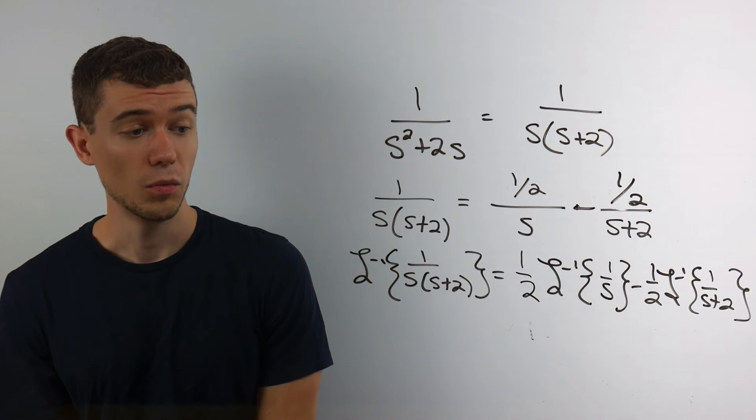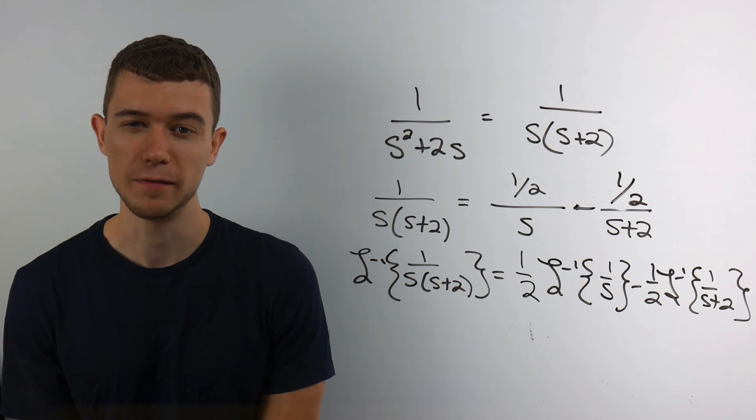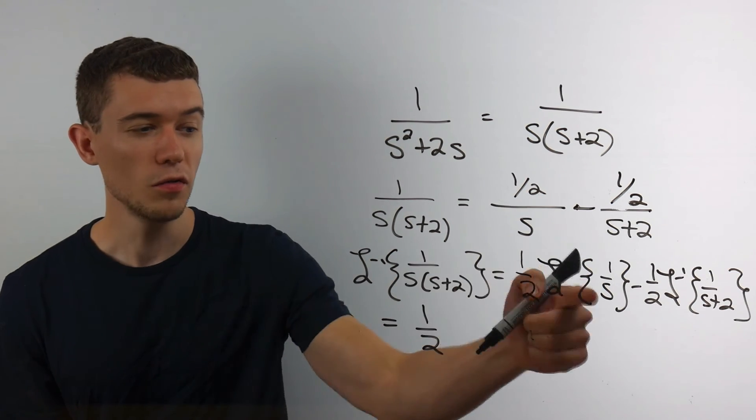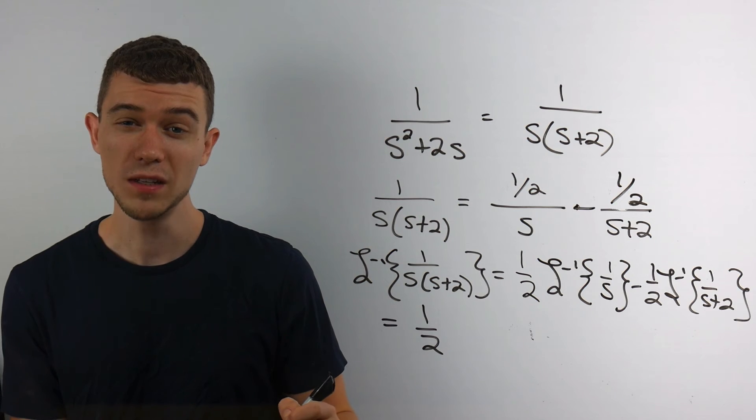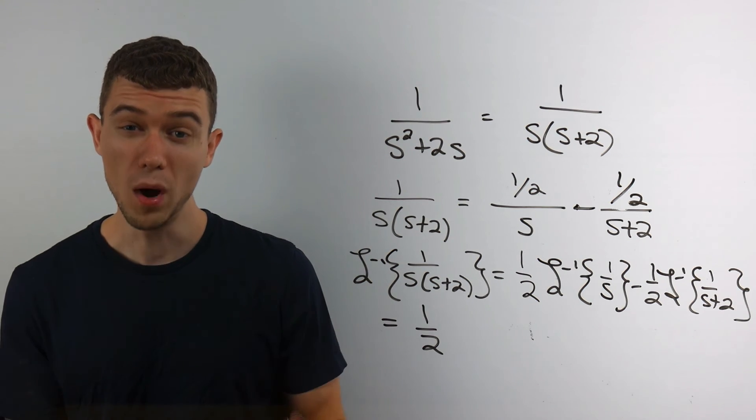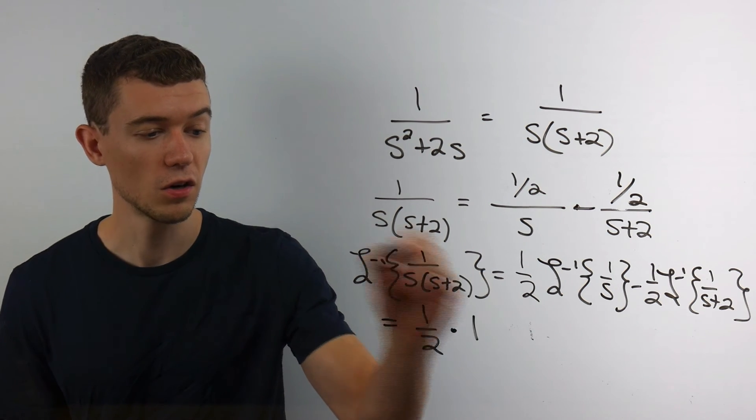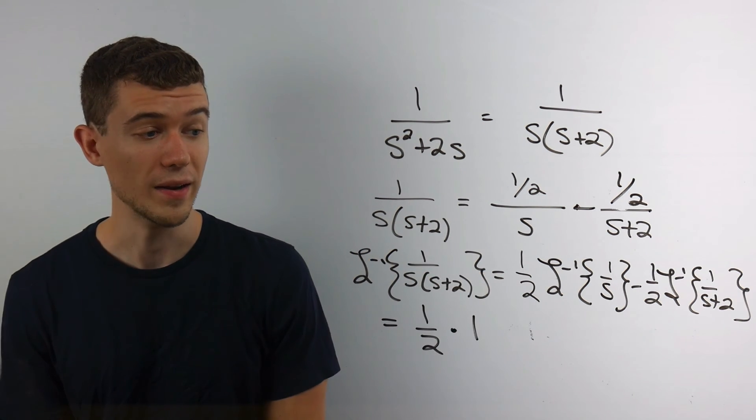Now these should be fairly easy to figure out using a table of Laplace transforms. If you notice, 1 over s is the Laplace transform of 1, right? The Laplace transform of 1 is 1 over s. So this first term will just be 1, and then I'd have minus 1 half.